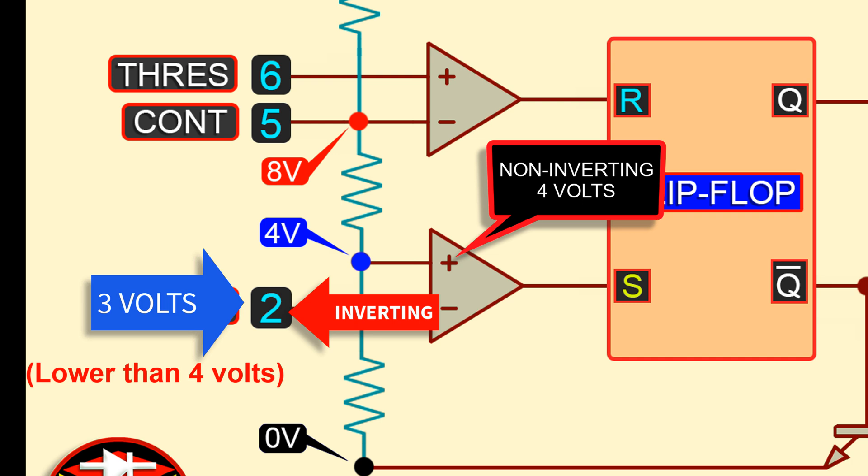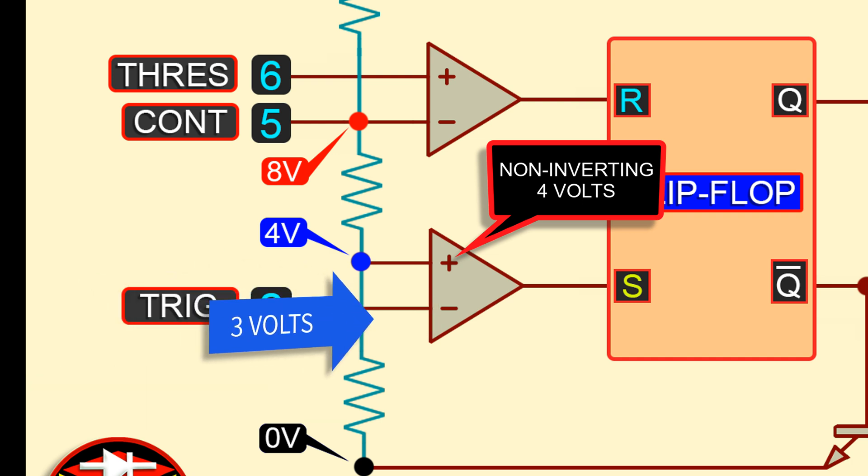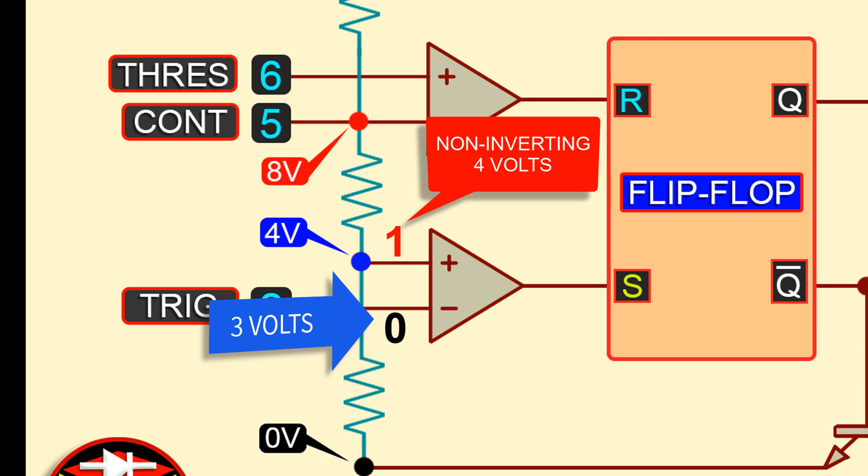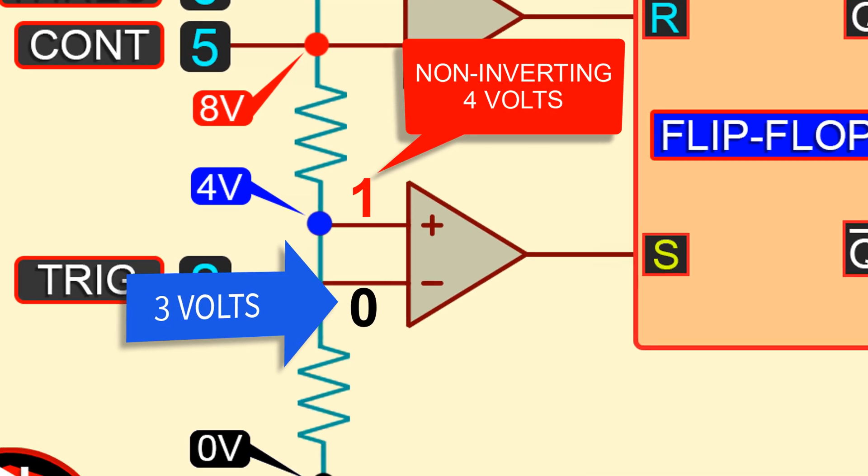Now, if we supply 3 volts to the trigger pin, then 3 volts will be low and 4 volts will be high. At this time, the comparator will output a low voltage.